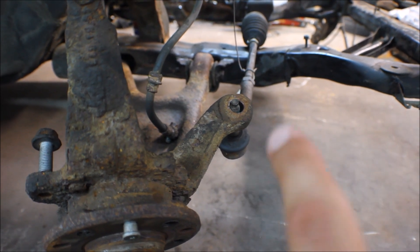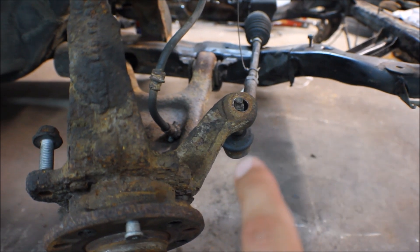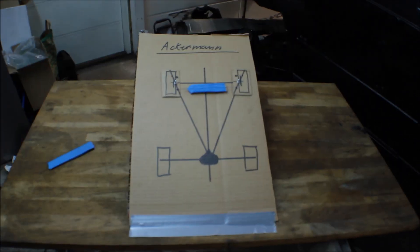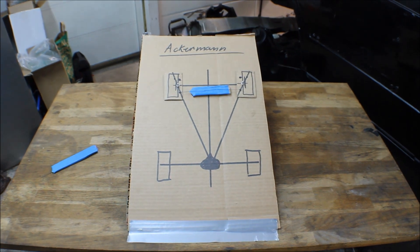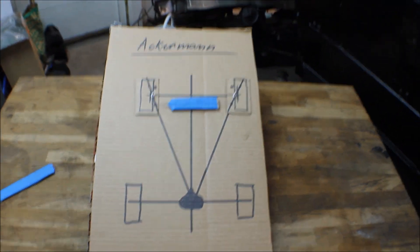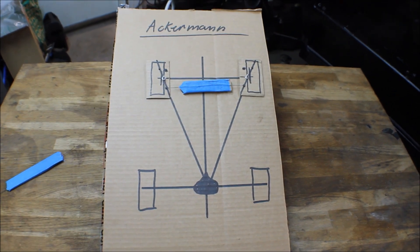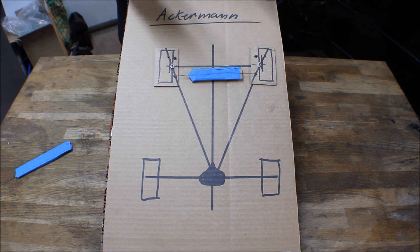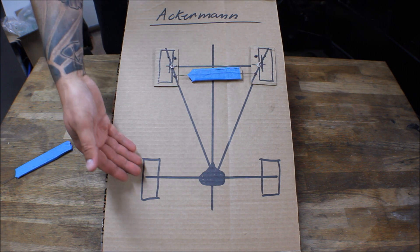And this is due to the Ackermann. So here I have a little drawing, excuse my drawing skills, but I think you'll get the point when I start to show this. Ackermann is a method used for getting the correct steering angles and stuff like that. If you see here, we have the rear wheels together with the rear axle.